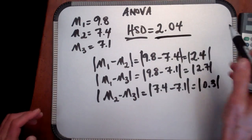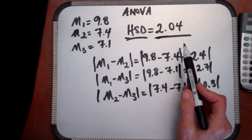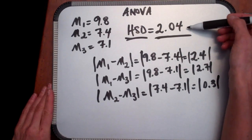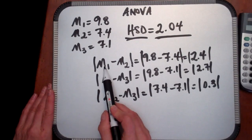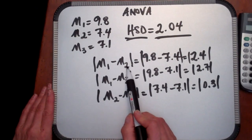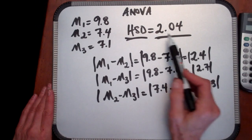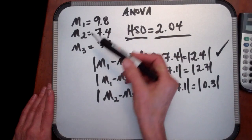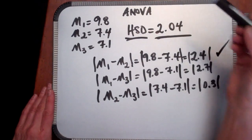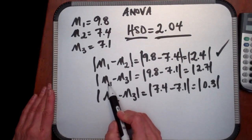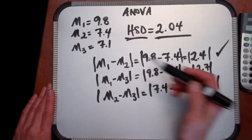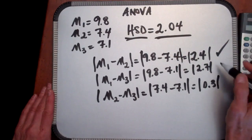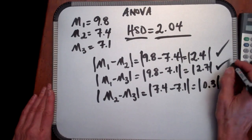So now we compare these values to our honestly significant difference value, and we ask which of these exceeds the HSD. The difference between group 1 and group 2 exceeds the HSD. Our HSD is 2.04. This difference is 2.4, so there's a significant difference between group 1 and group 2. The difference between group 1 and group 3, between our high-dose group and the control group, is also significant when we compare it to the HSD of 2.04, because this value is 2.7.